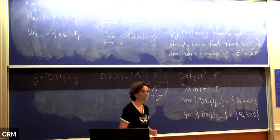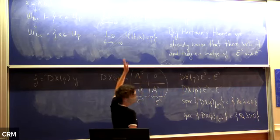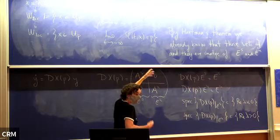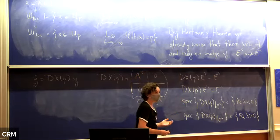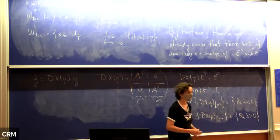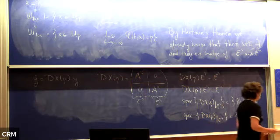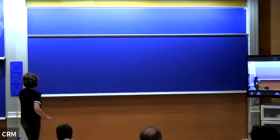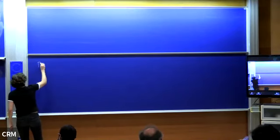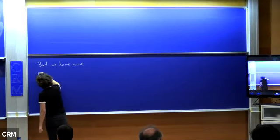So the spectrum of the differential restricted to E^s is contained in {Re(λ) < 0}, and similarly for the unstable part. The invariant manifolds of the system are just the image of the topological conjugacy given by Hartman's theorem applied to these linear sets. So they exist and have this structure, but we know more.